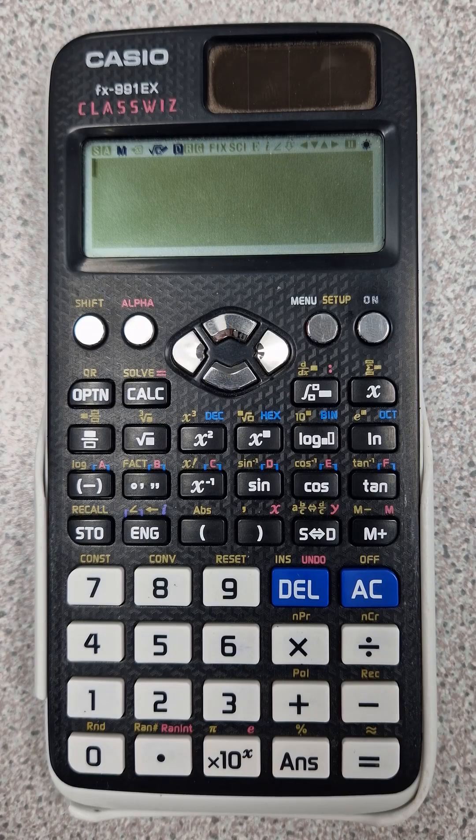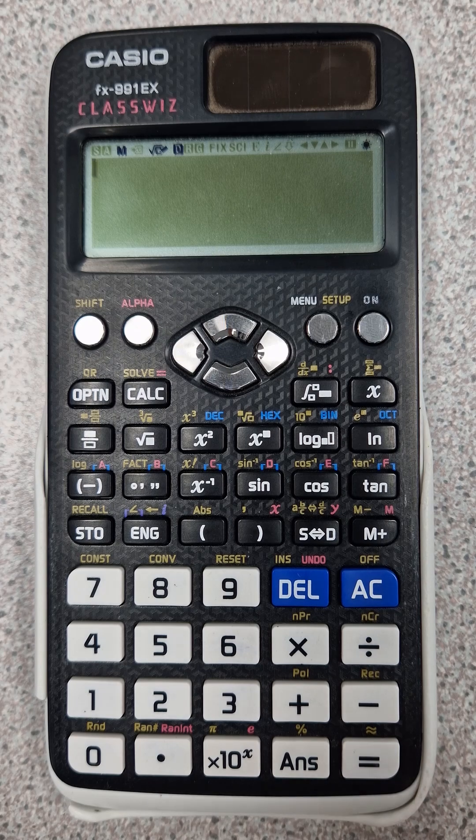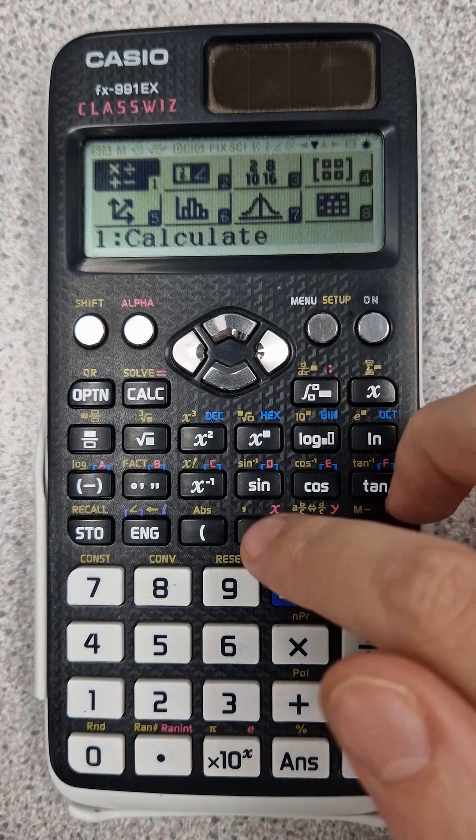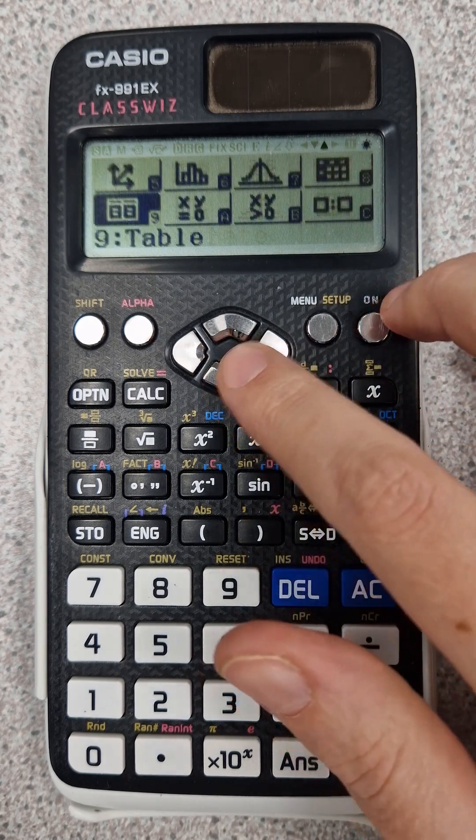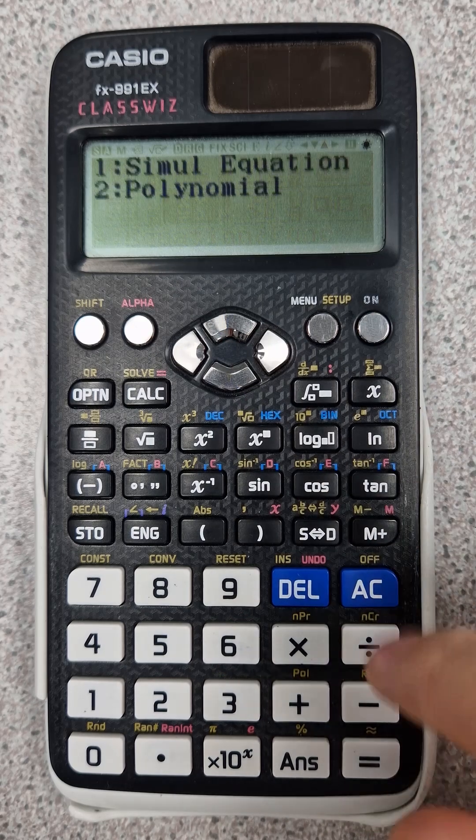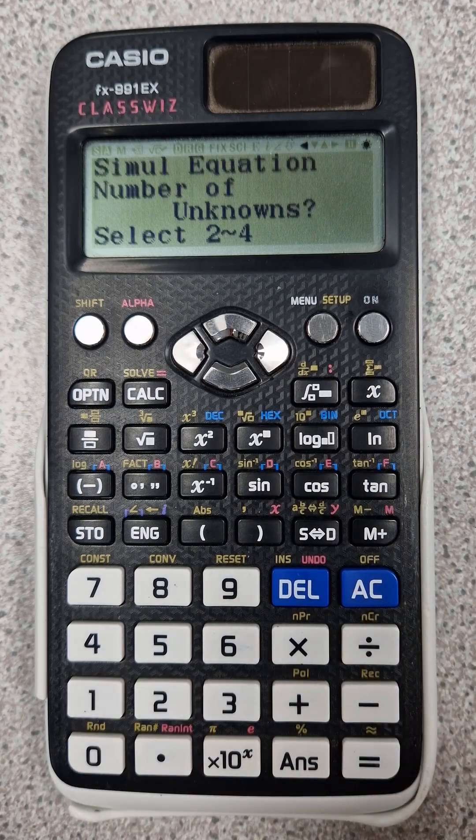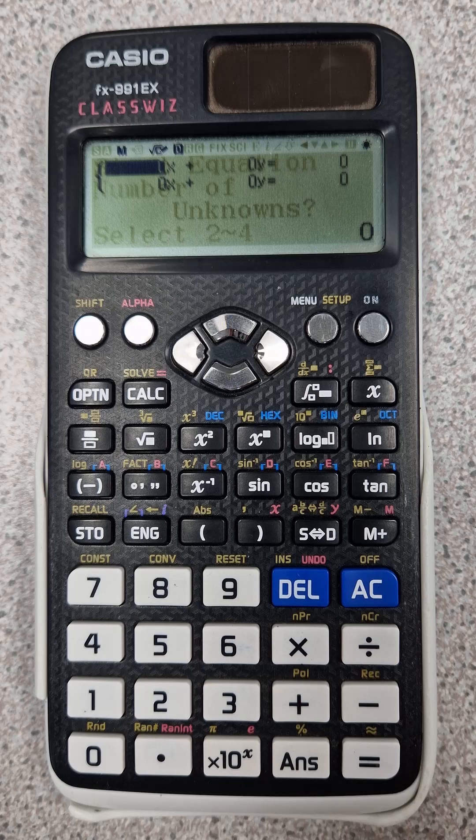If you have a slightly older version of this calculator, you can do exactly the same thing. So click menu, then we go down to equation. Then we go to 1, simultaneous equation. We have two unknowns, so we click 2.